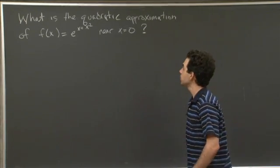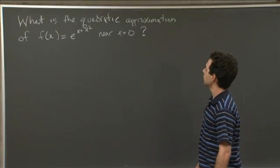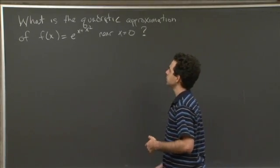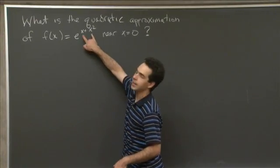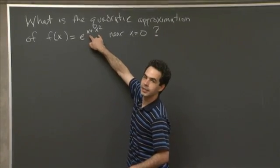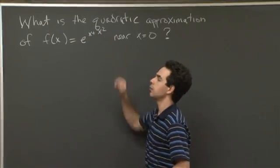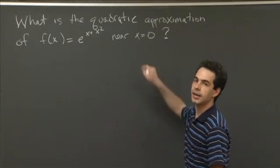So I have a question written here on the board. What is the quadratic approximation of the function f(x) = e^(x+x²), where x plus x squared is the exponent, near x equals 0?